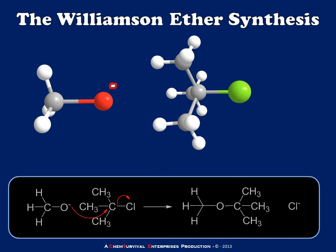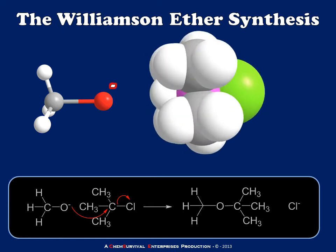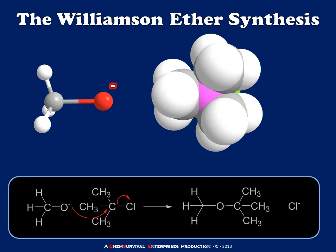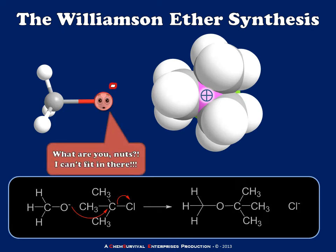We can think of this as switching R groups from an alcohol and an alkyl halide into the two R groups of an ether, so there are always two potential sets of reagents for any asymmetrical ether. The question comes up: could we make t-butyl methyl ether using methoxide and t-butyl chloride instead? The answer is no. The electrophilic carbon is buried deeply in t-butyl chloride — using a space-filling model, you can see there's really not much room for a nucleophile to reach. Even a small nucleophile like methoxide simply can't get in there for a nucleophilic substitution.